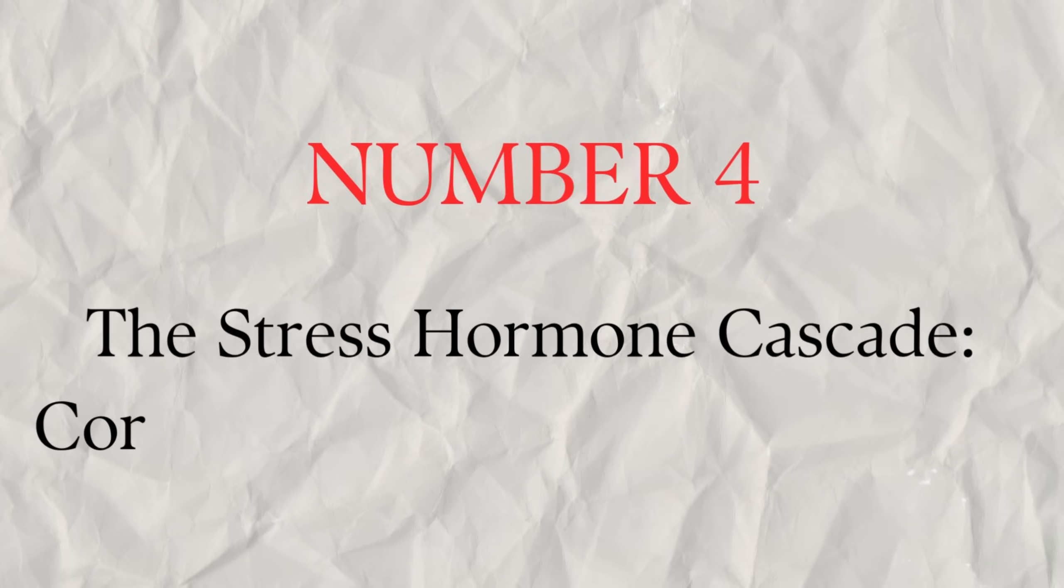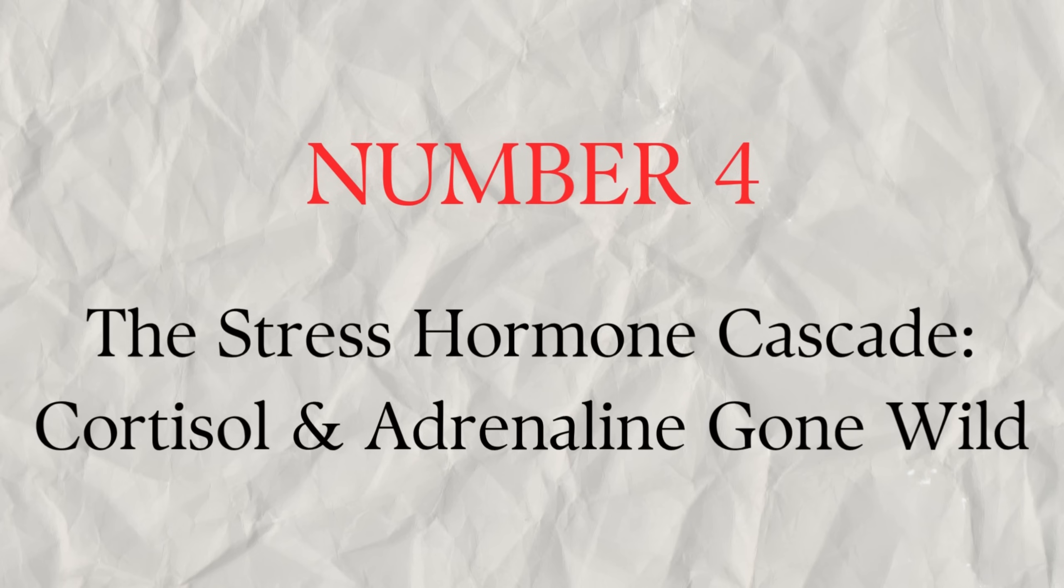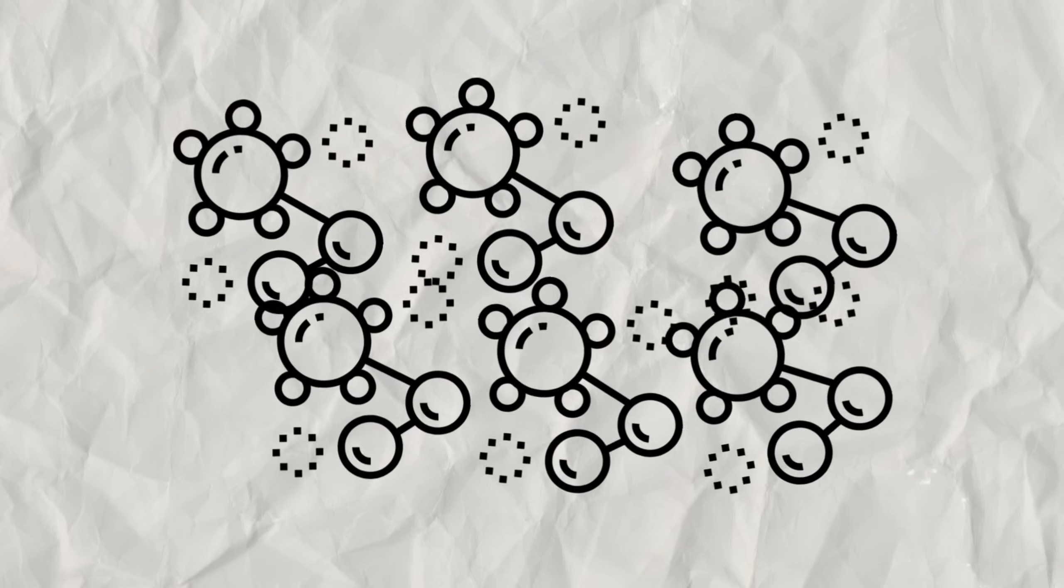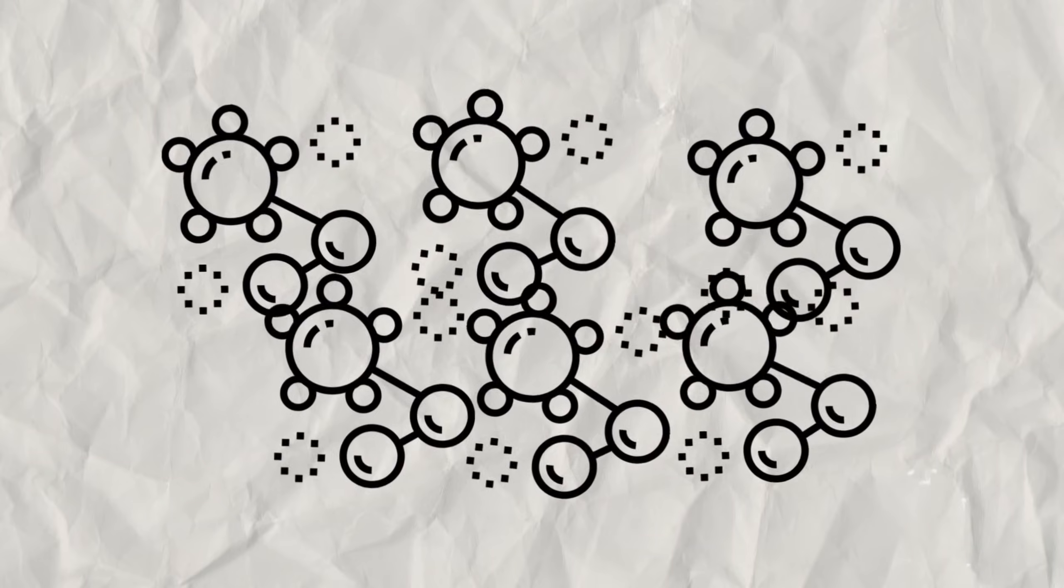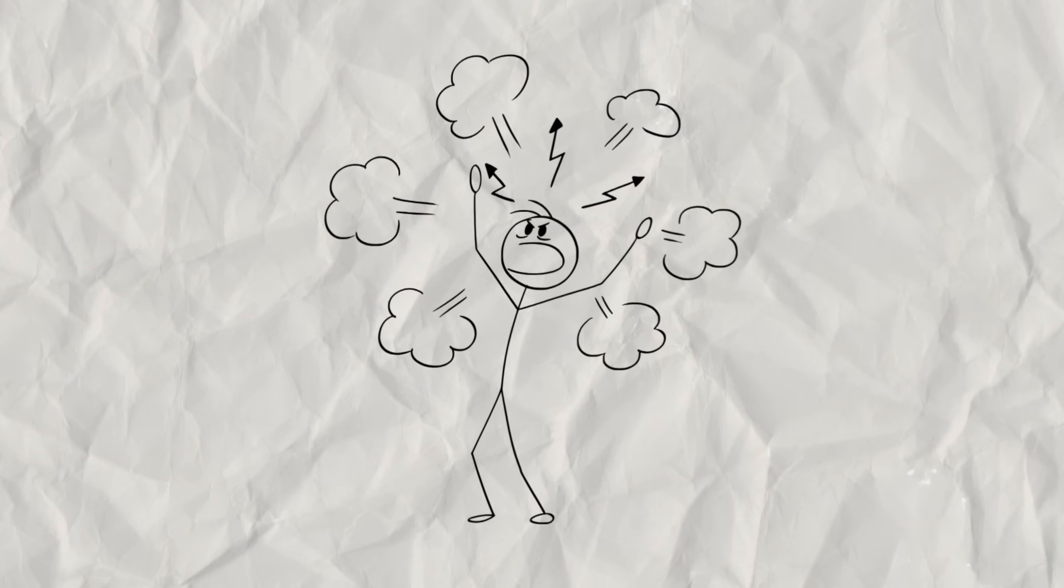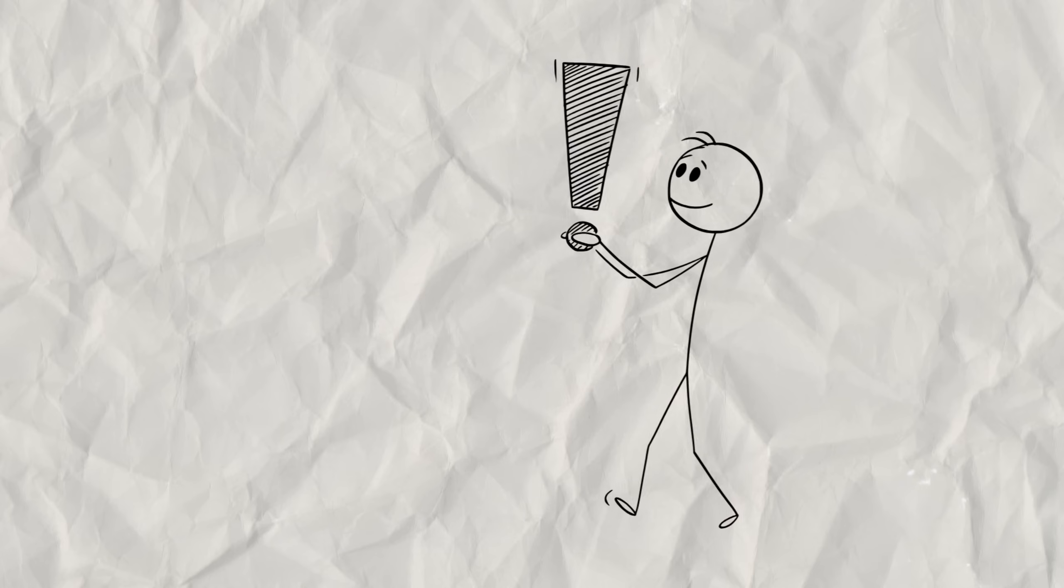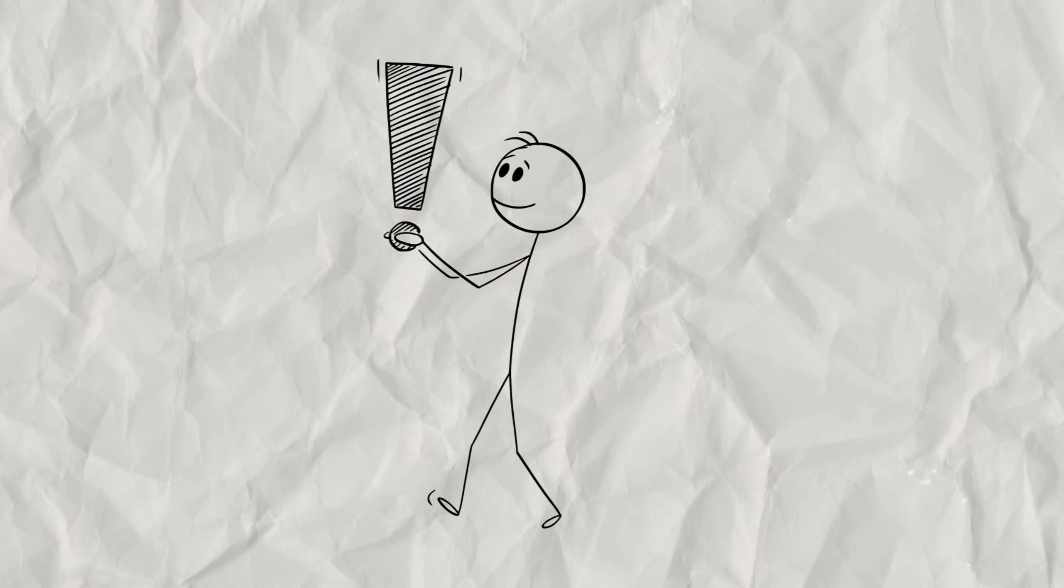Number four. The stress hormone cascade. Cortisol and adrenaline gone wild. Trauma triggers a surge of stress hormones, primarily cortisol and adrenaline. These are essential for immediate survival, providing a burst of energy and heightened awareness.